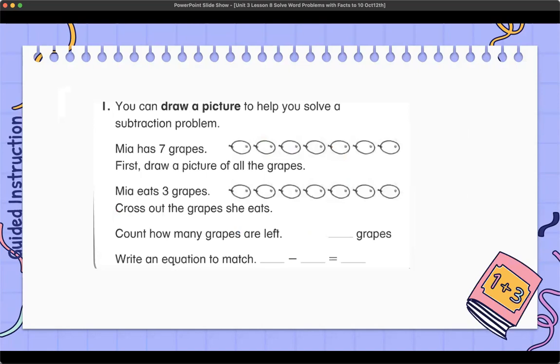The guided instruction: you can draw a picture to help you solve a subtraction problem. So what kind of problem are we going to be solving? Your child will respond. It's always posing these back as questions. Maya has seven grapes. How many grapes does she have? Then they respond again, going through each part of this problem gradually and understanding what they need to do and why.